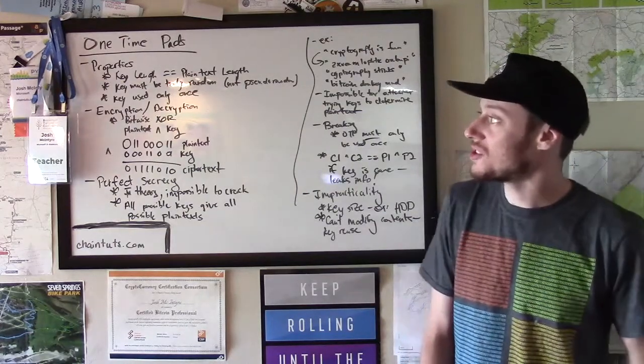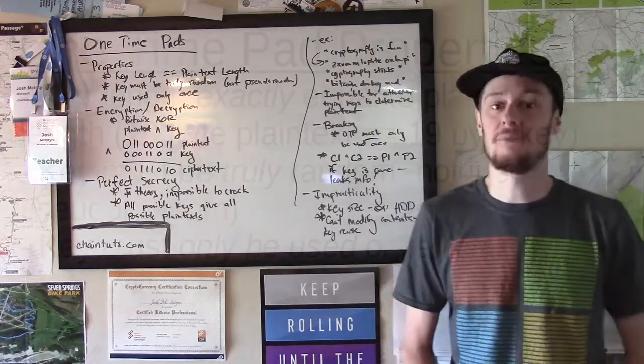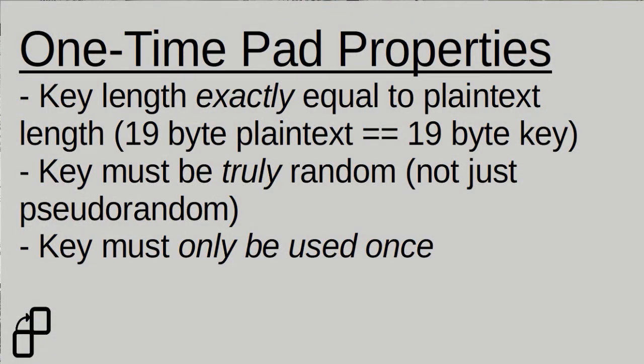So first, the properties of the one-time pad. A one-time pad simply is a cipher where you have a plain text and you have an exactly equal length key that gives you the cipher text. So if you have a 19-byte plain text, you must have an exactly 19-byte key.